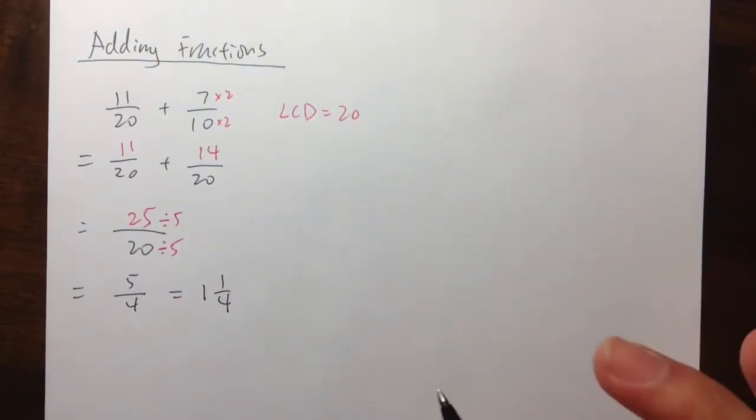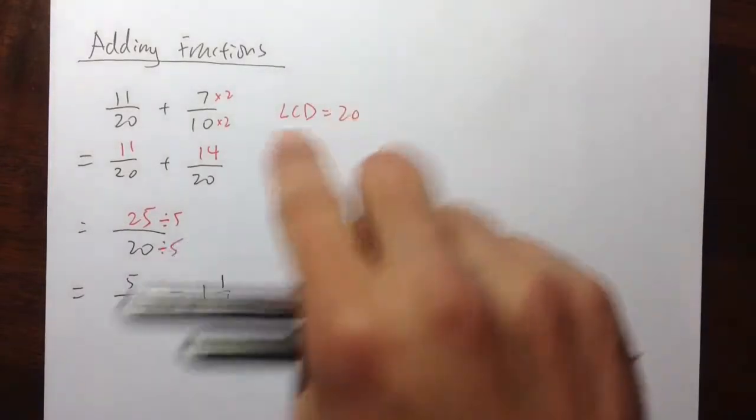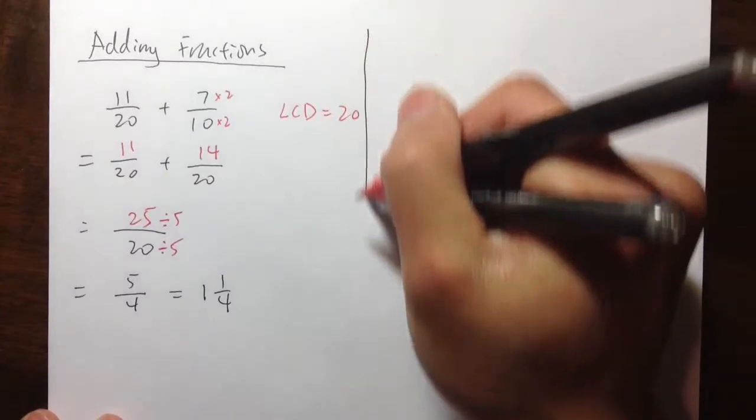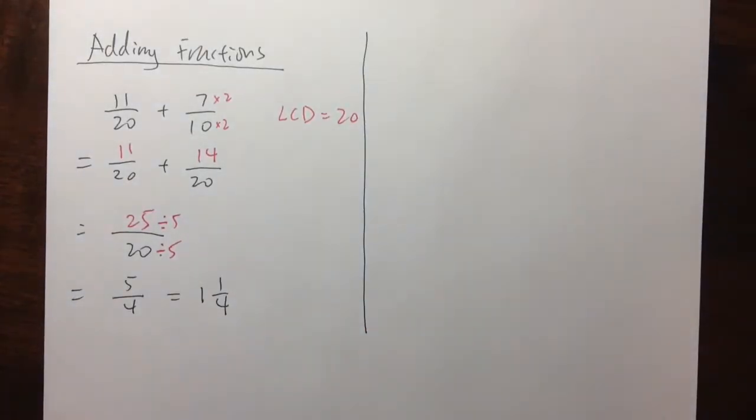Phew! So complicated, right? How many steps is there? The LCD, and then you add, and then you divide, and then you do the mixed number. A lot of steps, right? And we learned this as a kid back in 3rd or 4th grade.